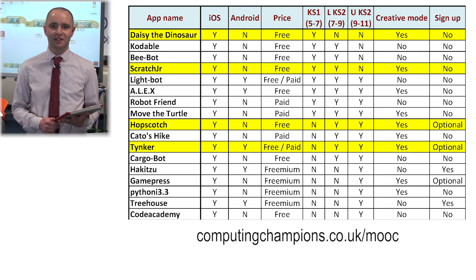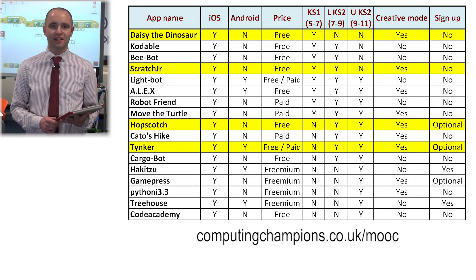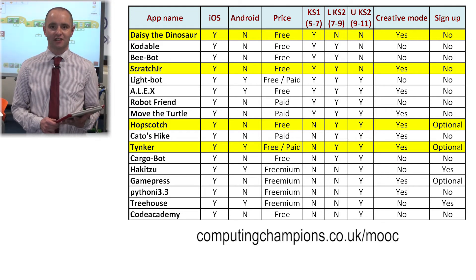Within the table I've highlighted the suitable age range for each app based on the requirements of the computing curriculum, and also whether they include a creative mode which allows pupils to produce their own content rather than simply progressing through an increasingly difficult set of levels. The four apps highlighted in yellow — Daisy the Dinosaur, Scratch Junior, Hopscotch, and Tinker — provide a steady progression for pupils as they begin to learn more advanced concepts. During this session I'll demonstrate two of the apps for younger children, Daisy the Dinosaur and Scratch Junior, with the other apps, Hopscotch and Tinker, in the next session.